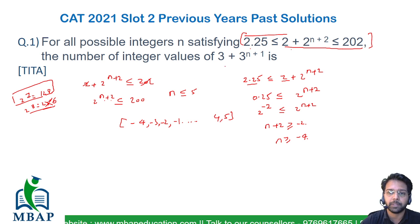Now these are the values which can be considered for the expression 3 + 3^(n+1), but I want this to become an integer.